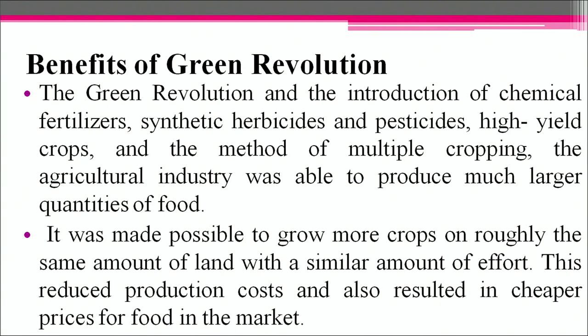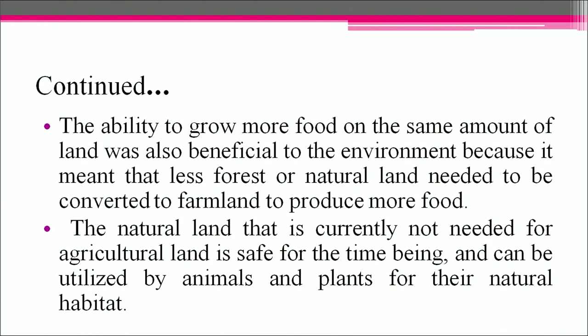The green revolution and the introduction of chemical fertilizers, synthetic herbicides and pesticides, high yielding crops and the method of multiple cropping enabled the agricultural industry to produce much larger quantities of food. It was made possible to grow more crops on roughly the same amount of land with a similar amount of effort, reducing production costs and resulting in cheaper food prices. The ability to grow more food on the same land was also beneficial to the environment, as less forest or natural land needed to be converted to farmland.